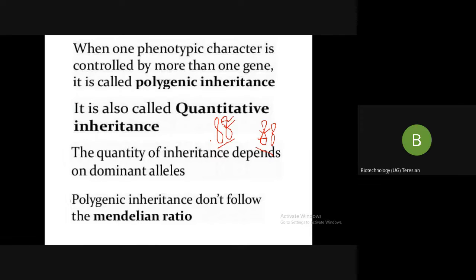This is called quantitative inheritance. The quantity of inheritance depends on the dominant allele — that is, how many dominant alleles are present in an individual determines the quantity. Whether they are having two dominant, three dominant, or six dominant alleles defines the quantitative inheritance. So polygenic inheritance means a trait depends on more than two genes, and quantitative inheritance depends on the number of dominant alleles an individual carries. These inheritances do not follow the Mendelian ratio.